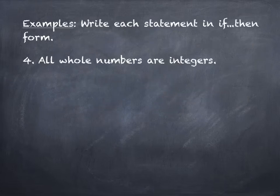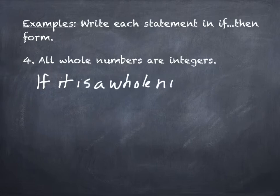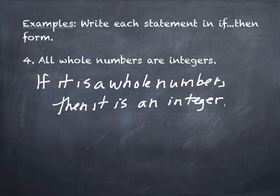Now let's take a few statements and write them in if-then form. The first one is the 'all P are Q' structure: all whole numbers are integers. Rewritten in if-then form: if it is a whole number, then it is an integer. That's the 'if P then Q' / 'all P are Q' structure.